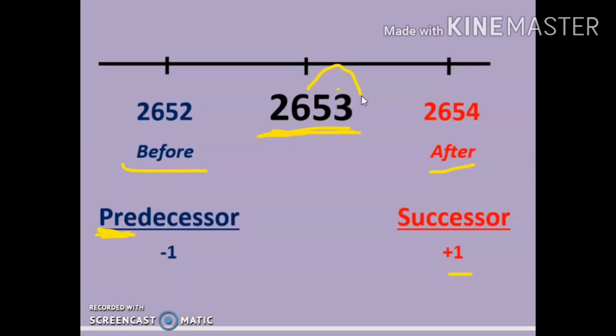The last two digits are 53. The number before 53 is 52, so the predecessor of 2653 is 2652. And successor means the number after, so what comes after 53? It's 54. So the successor of this number will be 2654.